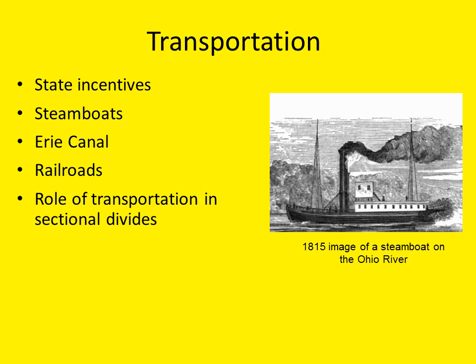By 1850, American railroads further decreased travel time between many American cities. However, by 1860, advances in transportation had also worsened the sectional divides that had been emerging, especially north versus south.